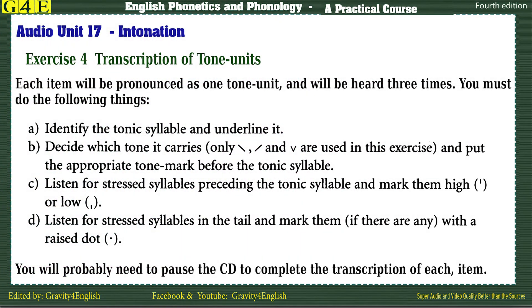Exercise 4. Transcription of tone units. Each item will be pronounced as one tone unit and will be heard three times. You must do the following things. A: Identify the tonic syllable and underline it. B: Decide which tone it carries. Only fall, rise, and fall-rise are used in this exercise, and put the appropriate tone mark before the tonic syllable.